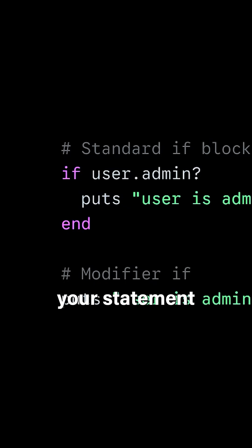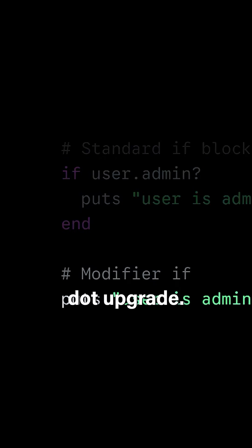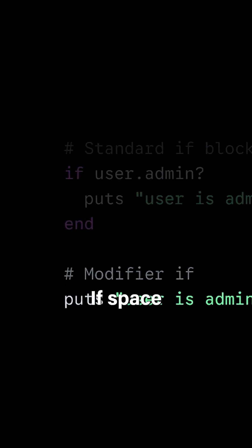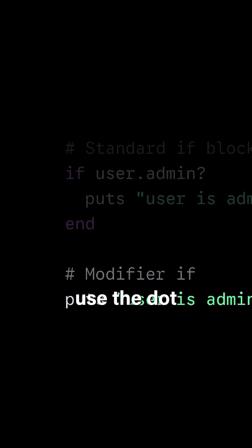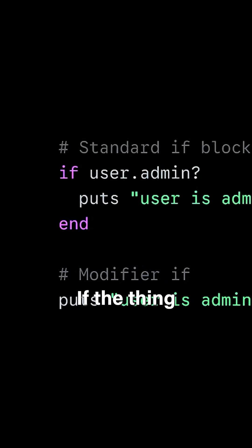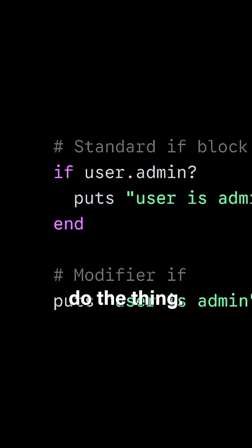You can have your statement you want to execute before the conditional. You can do user.upgrade — let's say you're calling an upgrade method on a user — space if, space, user.admin? We do the thing if the thing is true, instead of saying if the thing is true, do the thing.